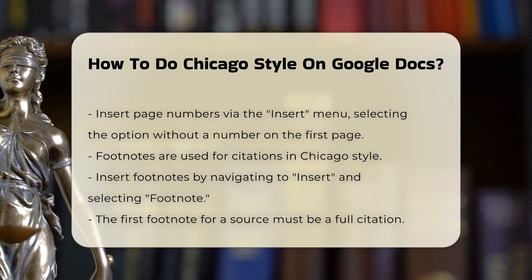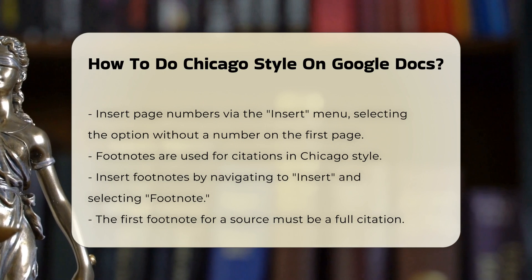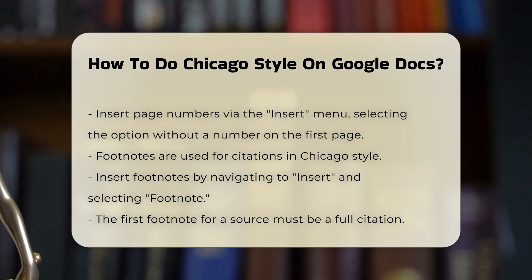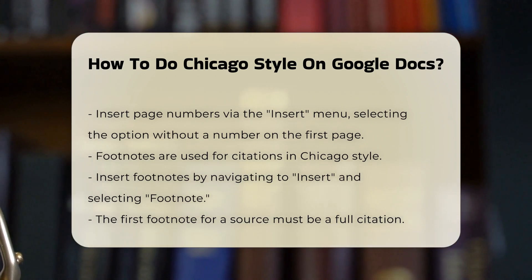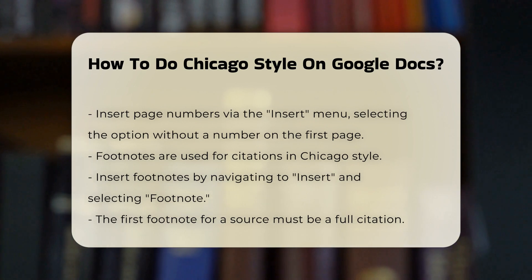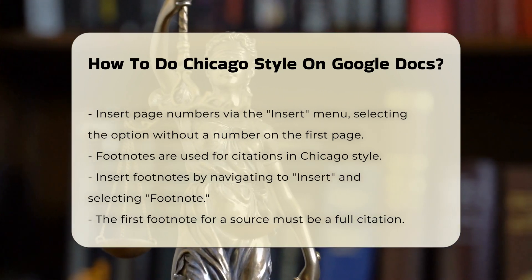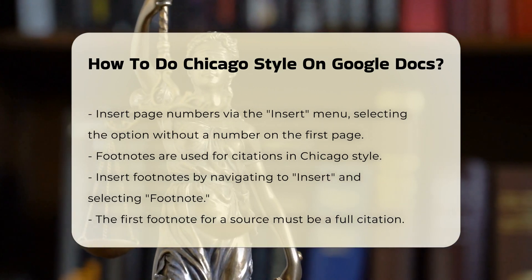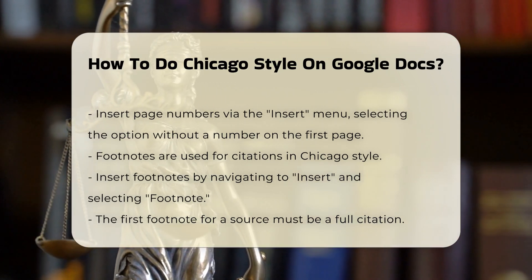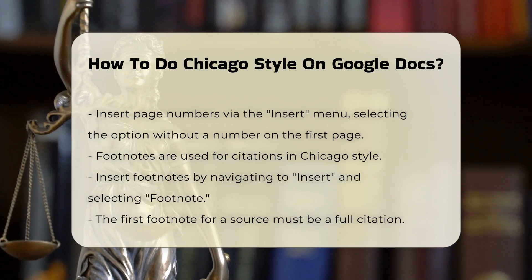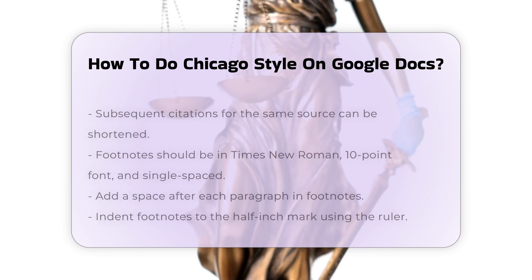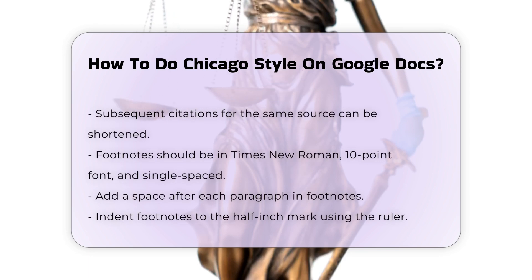Footnotes. Chicago Style uses footnotes for citations. To insert a footnote, click Insert, then Footnote. This will automatically take you to the bottom of the page where you can enter your citation. The first footnote for a source should be a full citation, while subsequent citations for the same source can be shortened.